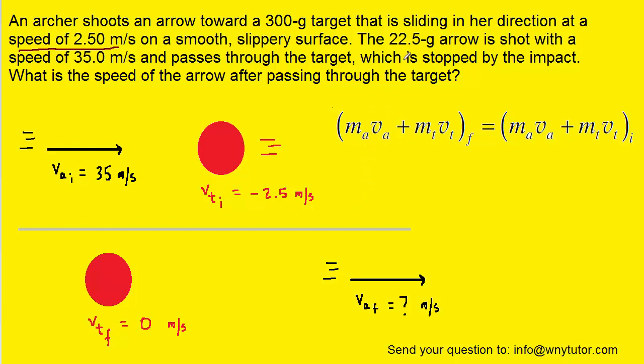The mass of the two objects was given. We know the arrow is 22.5 grams and the target is 300 grams. Because they're both in grams, it turns out we can leave them in that unit rather than having to convert them into kilograms.